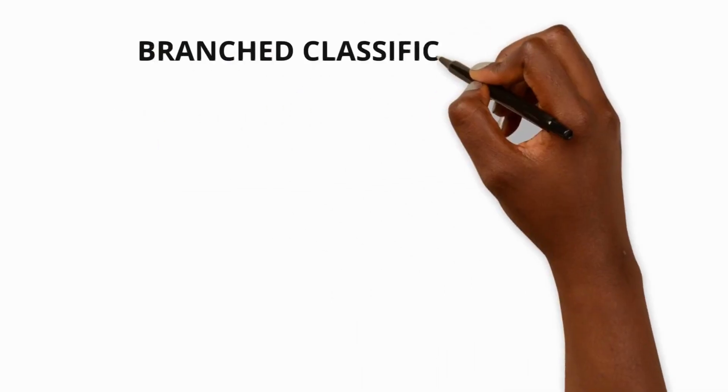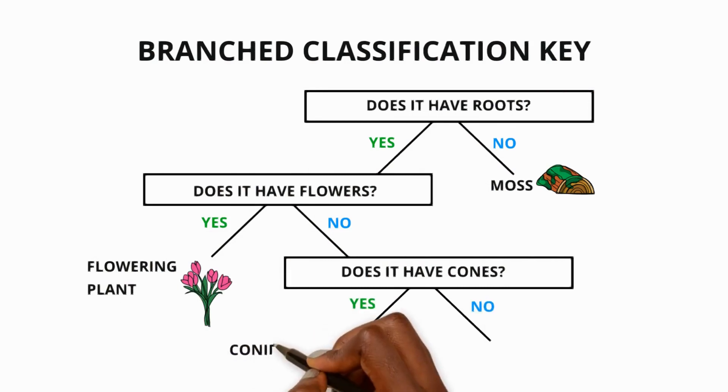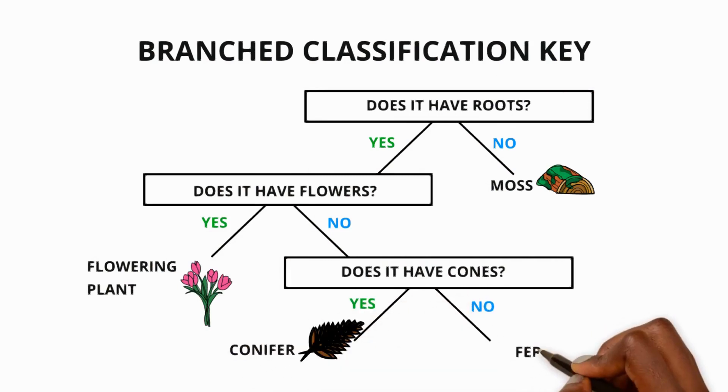A branch classification key can also be used. In this example we're identifying different types of plants. It's important to get lots of practice using and creating your own classification keys.